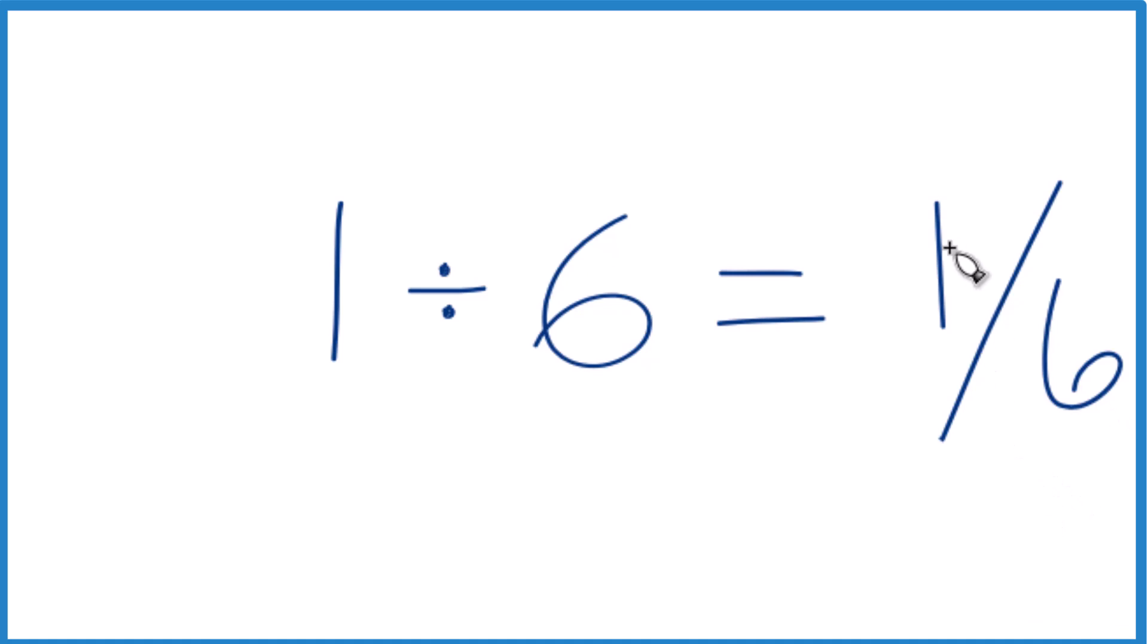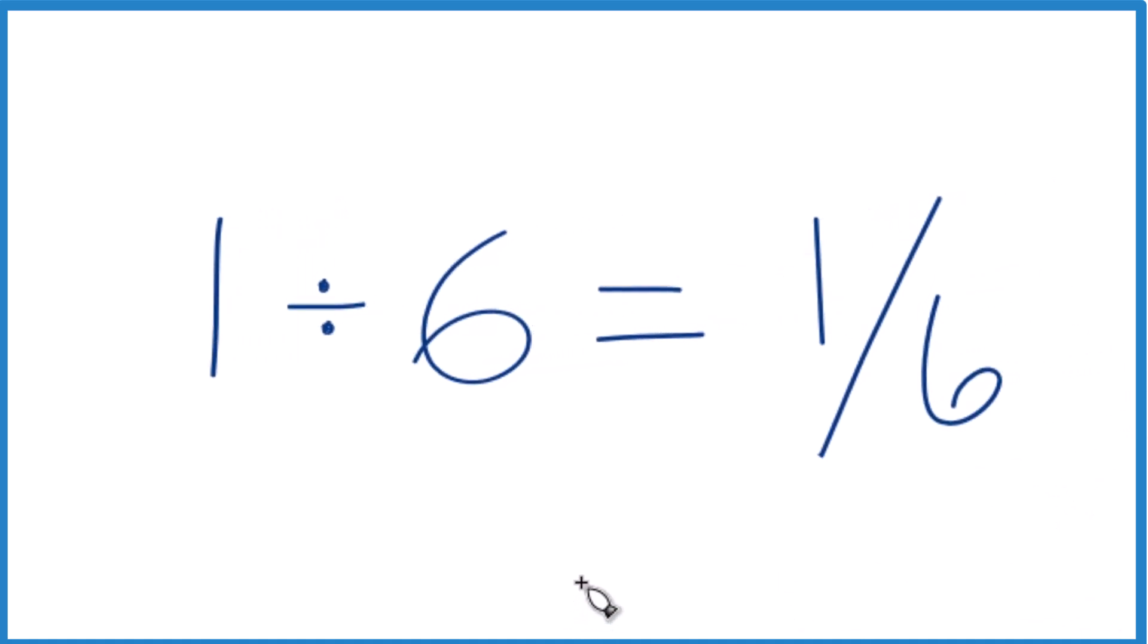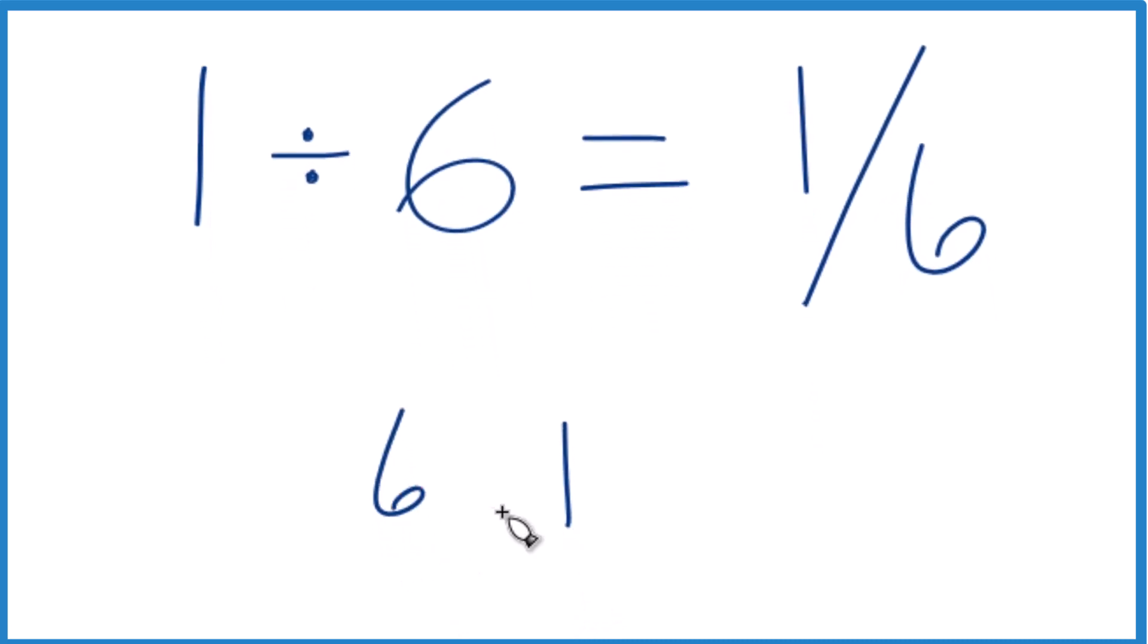Or if you wanted a decimal, you could take 1 and divide it by 6 longhand. So we want to see how many times 6 goes into 1. It doesn't go into 1, but if we put a 0 and a decimal point up here, we could call this 10.